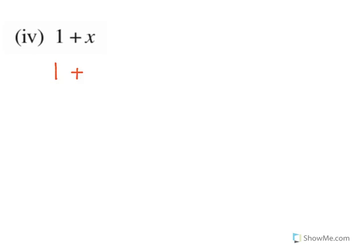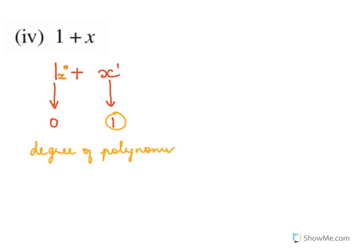For 1 + x: the constant 1 has power 0, and x has power 1. The highest power is 1, so the degree is 1. Therefore it is a linear polynomial, since degree 1 means linear.